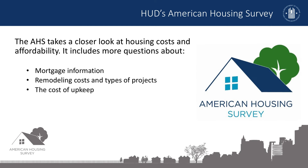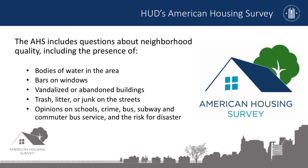Another key difference: the AHS takes a closer look at housing costs and affordability. It includes more questions about mortgage information, remodeling costs and types of projects, and the cost of upkeep. Different from the ACS, the AHS also includes questions about rental subsidies. The AHS also includes questions about neighborhood quality, including the presence of bodies of water in the area, bars on windows, vandalized or abandoned buildings, trash, litter, or junk on the streets, as well as opinions on schools, crime, bus, subway and commuter bus service, and the risk for disaster.